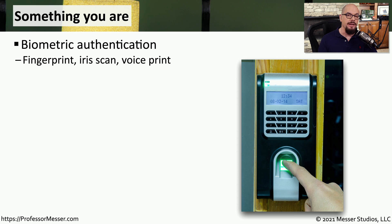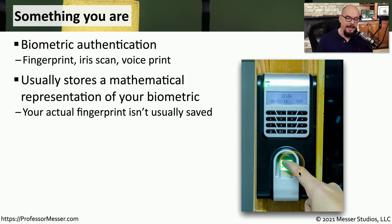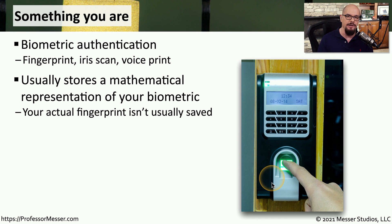The third authentication factor is something you are — a biometric factor, such as a fingerprint, an iris scan, or perhaps a voice print. This usually works by taking a mathematical representation of some part of your body, such as a fingerprint, and storing it. The next time you use your finger on that biometric reader, it will perform the same calculation and compare that to what's been stored previously.